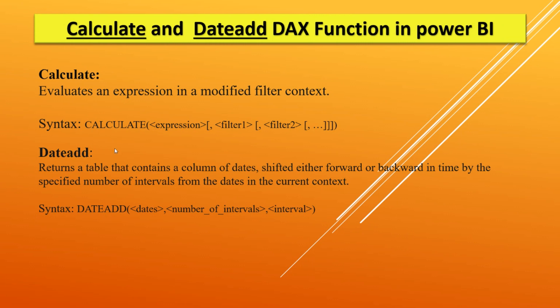The DATEADD function returns a table that contains a column of dates shifted either forward or backward in time by a specified number of intervals from the dates in the current context. So whatever context we are giving in the graph, it will calculate the value as per that context.